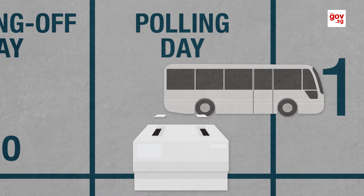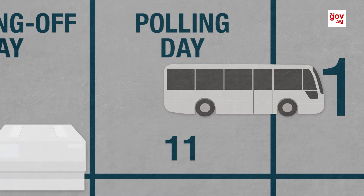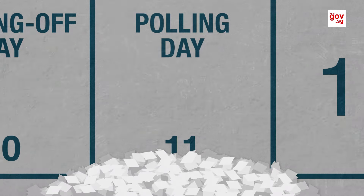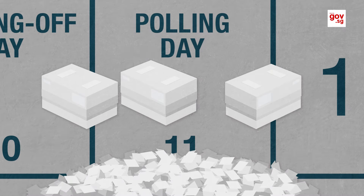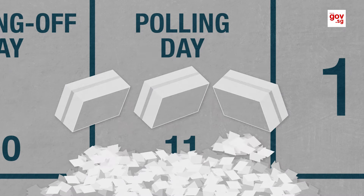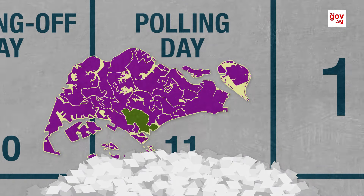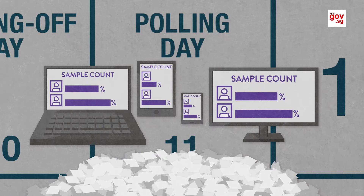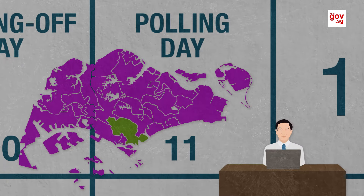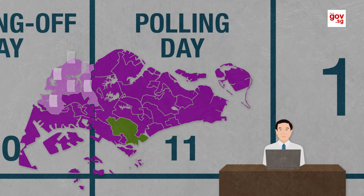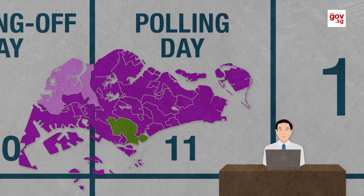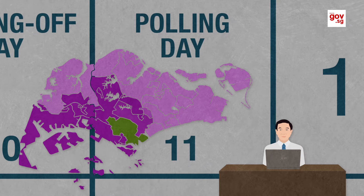At the close of the polls, ballot boxes are sealed and transported to counting centres. A sample count, which estimates the possible electoral outcome, will be announced for each electoral division across different media platforms. Once the votes are counted, the RO compiles the results from all counting centres for each electoral division.